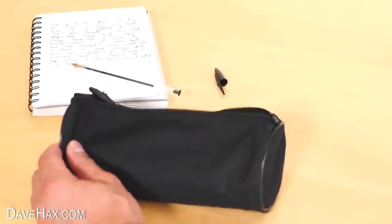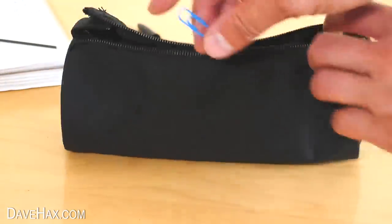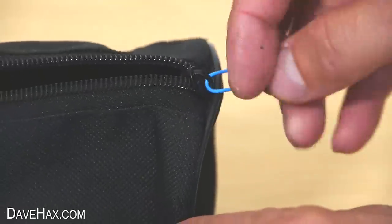If your zip breaks on your pencil case, you can take a paper clip and thread that onto your zipper to use as a handle.